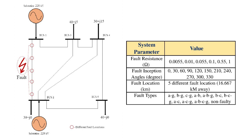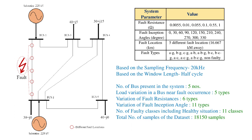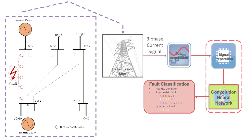After performing a large simulation in MATLAB Simulink, the following dataset has been prepared, which is based on a 20 kHz sampling frequency on the half cycle of a three-phase transmission line current signal. This dataset has a total of 18,150 samples of 11 different classes, where each sample has a data length of 600 data points.